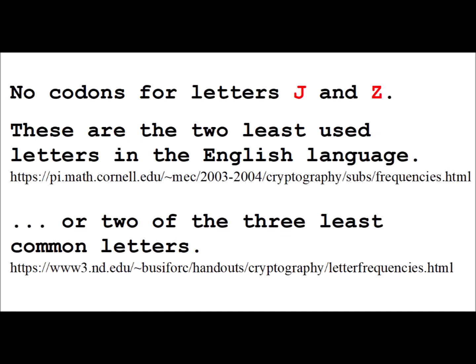So, using these variant codons, we end up having codons that will code for 24 of the 26 English letters, excluding J and Z. And this isn't that big of a problem because those are the two least used letters in the English language, according to one source, or two of the three least common letters according to another source.